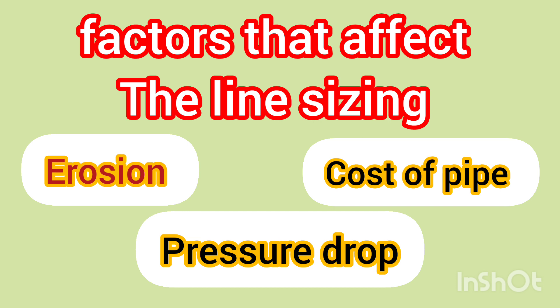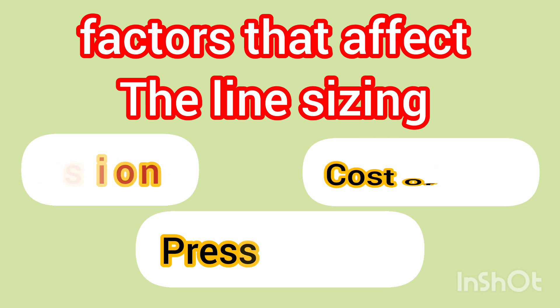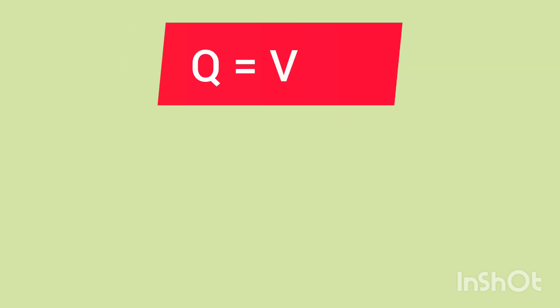So the basic formula for calculation of line sizing is flow rate equals velocity times cross-sectional area of pipe, that is Q = V * A, where Q is in meter cube per second, V is velocity in meter per second, and A is cross-sectional area in meter square.